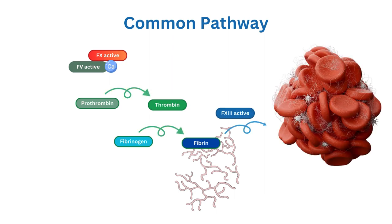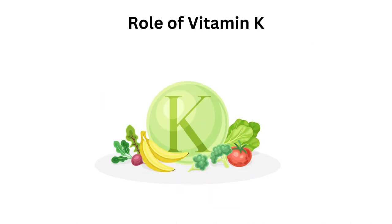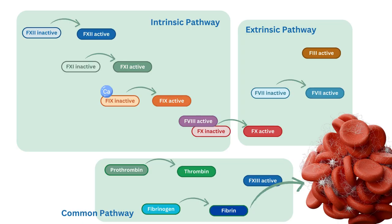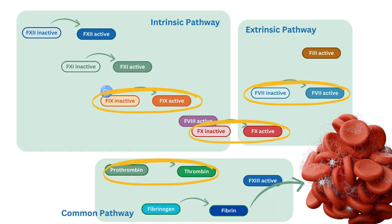The clotting process is reinforced by the activation of Factor 13, which stabilizes the fibrin mesh. Vitamin K is an essential nutrient that plays a crucial role in the coagulation cascade. It is required for the synthesis of several clotting factors in the liver, including Factors 2, 7, 9, and 10.